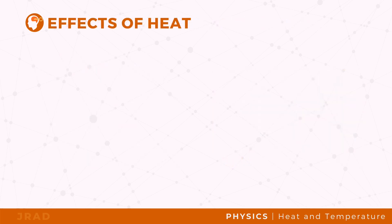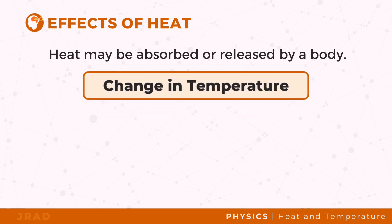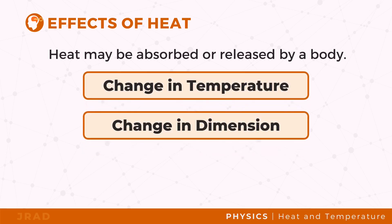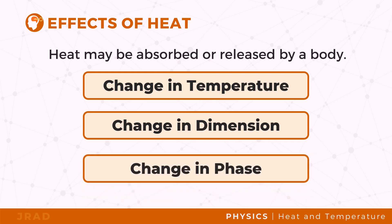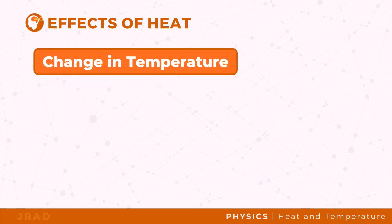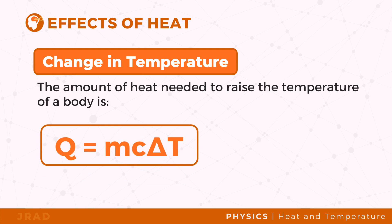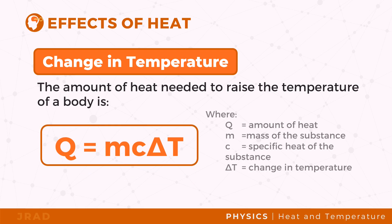Heat may be absorbed or released by a body, which causes changes in temperature, change in dimension, or change in the phase of the substance. The amount of heat needed to raise the temperature of a body is Q equals mcΔT, where Q is the amount of heat, m is the mass of the substance, c is the specific heat of the substance, and ΔT is the change in temperature.